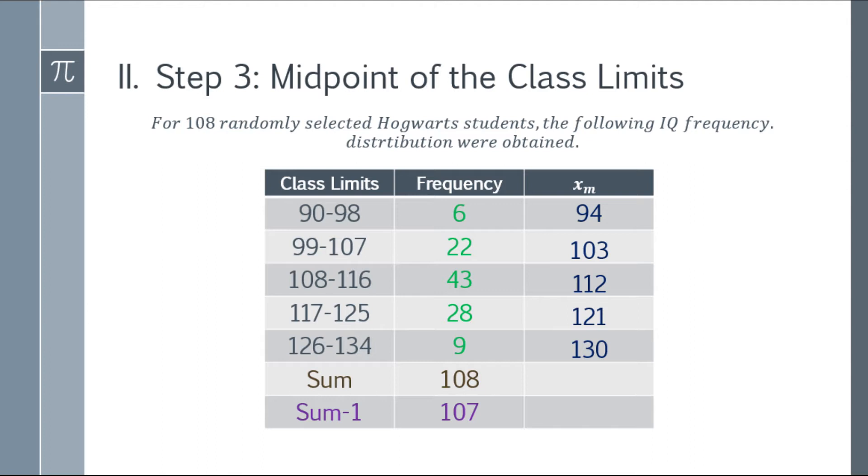Next, we have to get the midpoint of the class limits, or the average, represented by x sub m. Take 90 plus 98, divide by 2. So 90 plus 98 is 188, divide by 2, that will be 94. Next is 99 plus 107, that will be 103. The following answers will be 112, 121, and 130. You'll notice if your answer is correct by the pattern—it's adding 9 each time. So we've completed the midpoint of the class limits column.